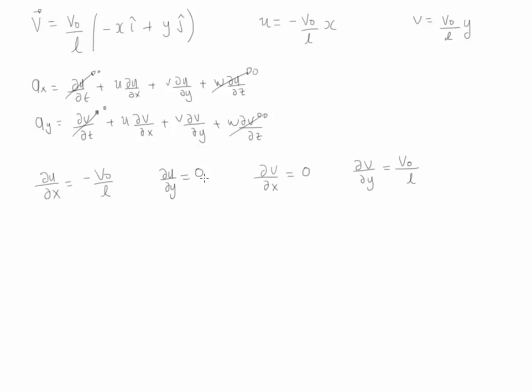Now we substitute back. We notice that this derivative is zero as well as this one, so we can get rid of this term and this term. Therefore, the acceleration in the x-axis simply reduces to u du/dx, and we replace the quantities as negative v0 divided by L times x, and the derivative, which is minus v0/L. So we multiply it out, and we get v0 squared over L squared times x.